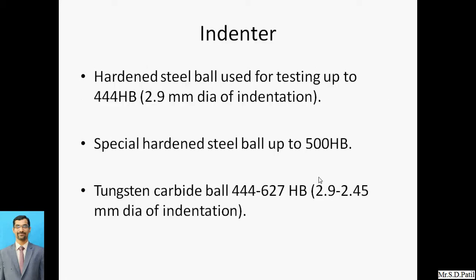For hardness values of 444 HB with a 2.9 mm diameter indentation, special hardened steel balls are used up to 500 HB. For higher values, tungsten carbide balls are used, covering HB values from 444 to 627. These different indenters are used to conduct the hardness testing.